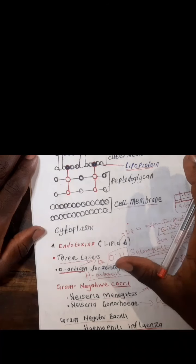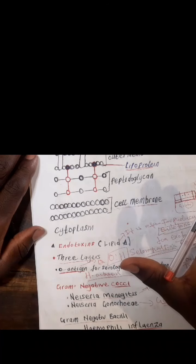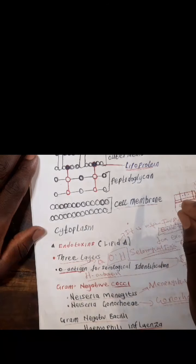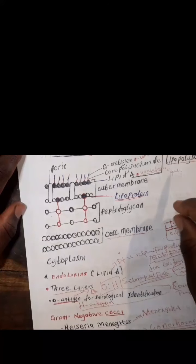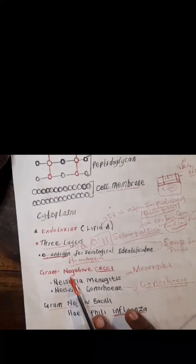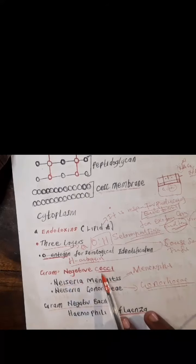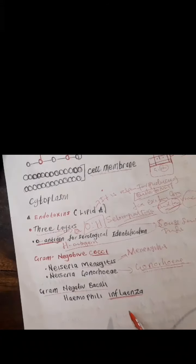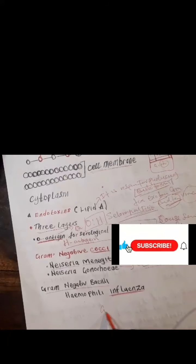Thank you so much. In the next video, we are going to consider the gram-negative rods, since we have already considered examples of gram-negative cocci and gram-negative bacilli, we will now look at the Enterobacteriaceae.